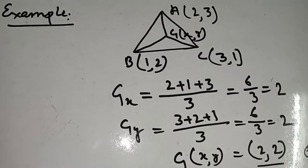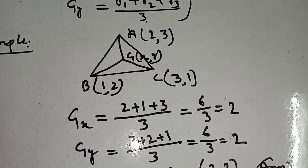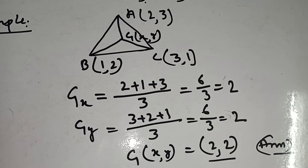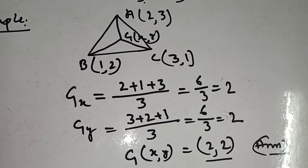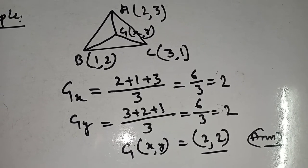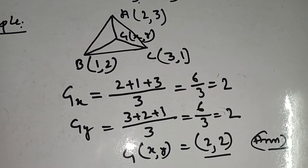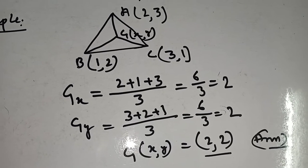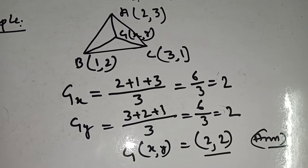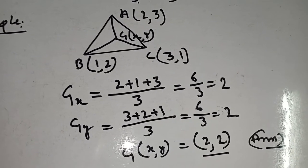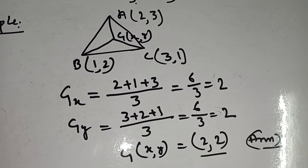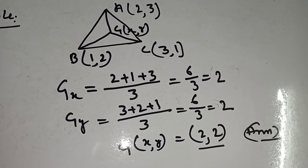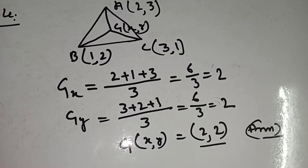For triangle ABC, the coordinate of A is (2, 3), B is (1, 2), and C is (3, 1). Find the centroid G(x, y). The coordinate of A is (x1, y1), B is (x2, y2), C is (x3, y3). So Gx = x1 + x2 + x3 / 3 = 2 + 1 + 3 / 3 = 6 / 3 = 2. And Gy = 3 + 2 + 1 / 3 = 6 / 3 = 2.